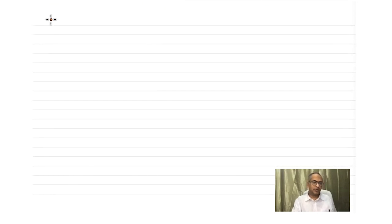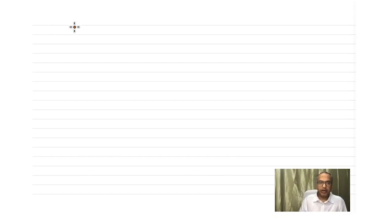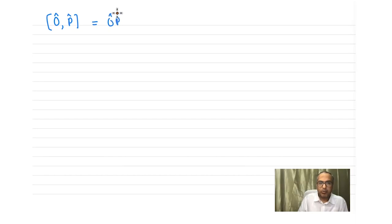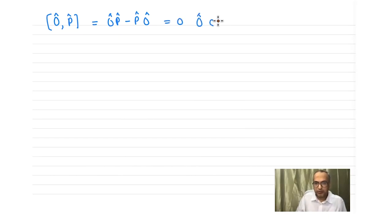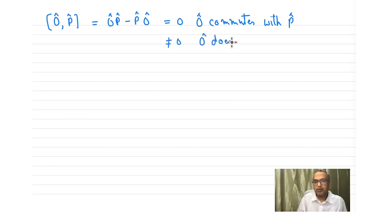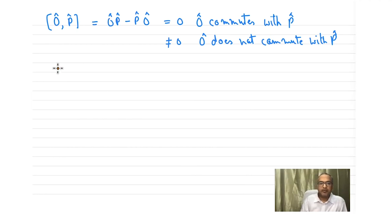Now let's return to the first condition: the operator must commute with parity. Commutation is written mathematically as [O, P], which means O·P − P·O. If this equals zero, we say O commutes with P. If it does not equal zero, we say O does not commute with parity.